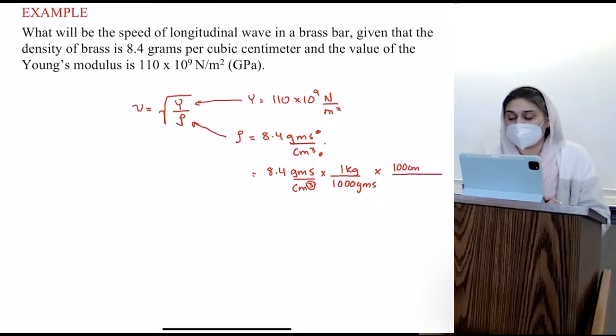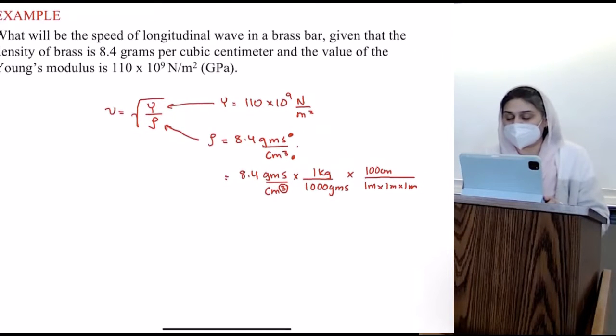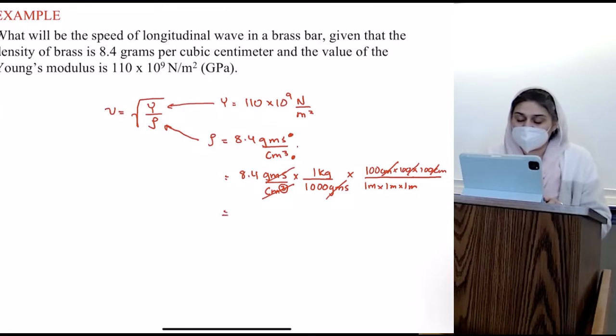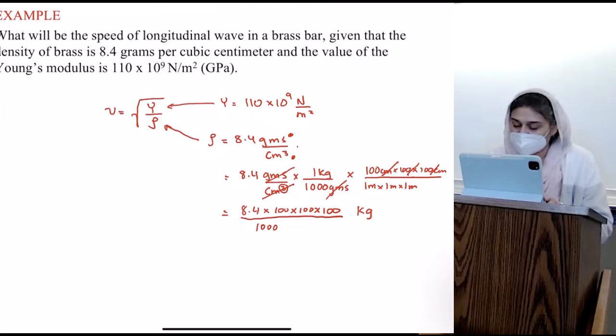So I will do one meter times one meter times one meter, or 100 centimeters times 100 centimeters times 100 centimeters. That means the grams will go away. The centimeter cube, three of these will go away, because there should be three of them. And what am I left with? 8.4 times 100 times 100 times 100 kilograms divided by 1,000 meter cubed. See, there's three of them here.